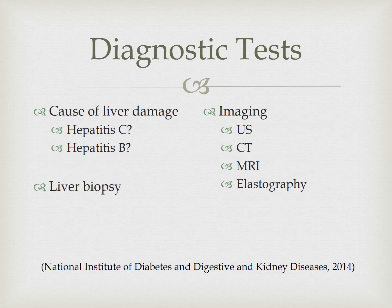The provider can also check for hepatitis B and C, which could be the cause of the liver damage. A liver biopsy is a primary way to confirm the diagnosis of cirrhosis and can also identify the cause of the liver damage, though it is an invasive procedure. Imaging studies such as ultrasound, computerized tomography, magnetic resonance imaging, and elastography are used to identify splenomegaly, esophageal varices, and changes in liver structure.